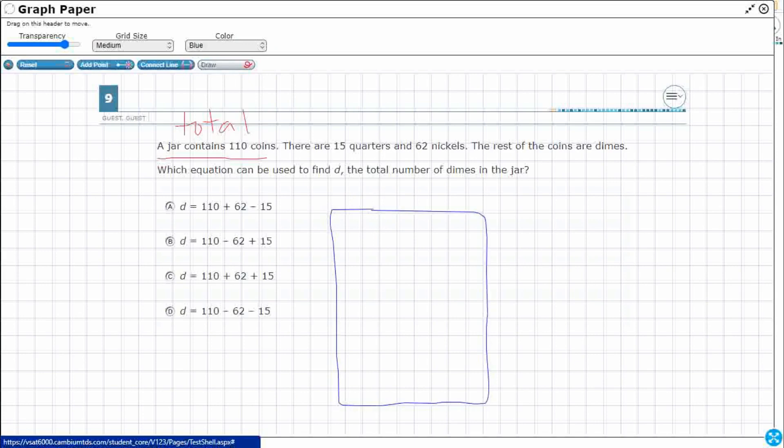And so I've got 110 coins. So what do I have inside that jar? I've got 15 quarters. Now I'm not going to draw them all, I'm just going to kind of put like a pile. And I'll label that 15 Q.